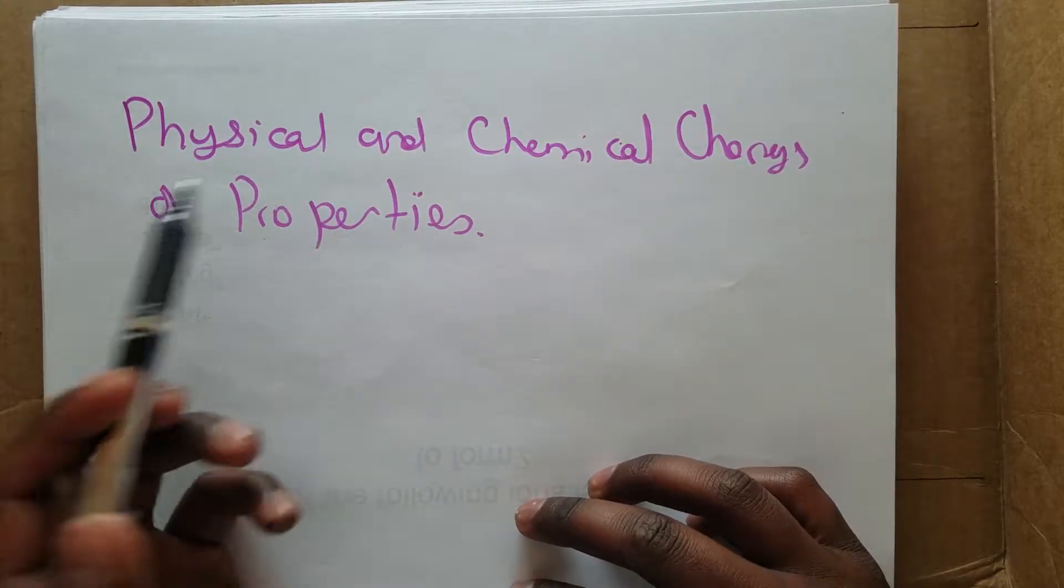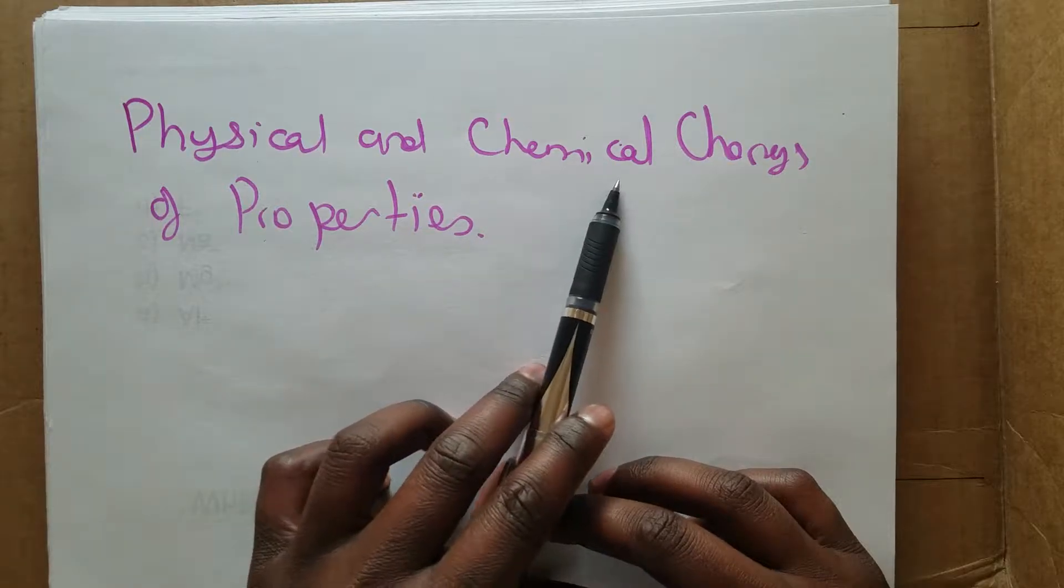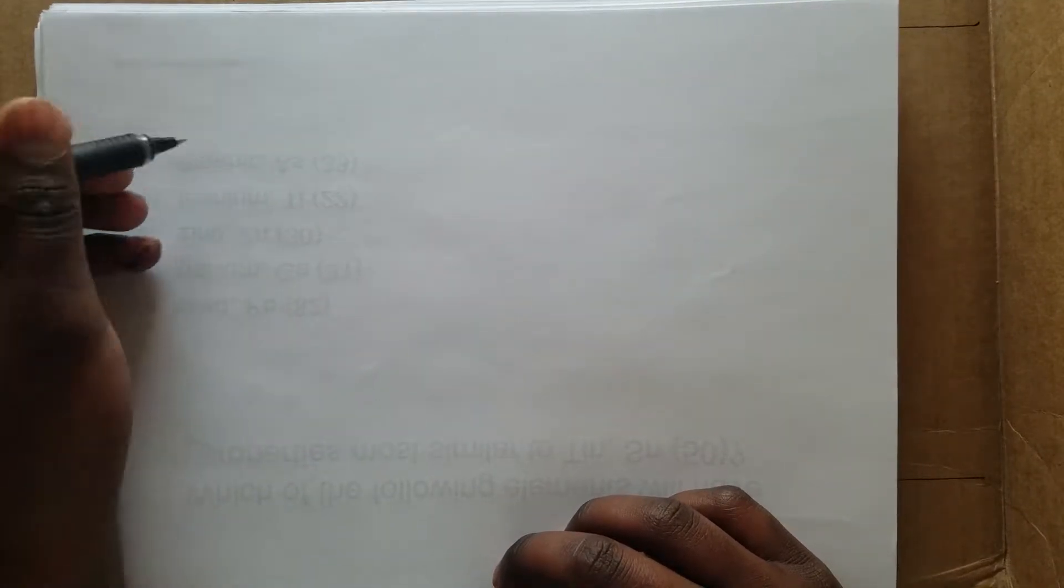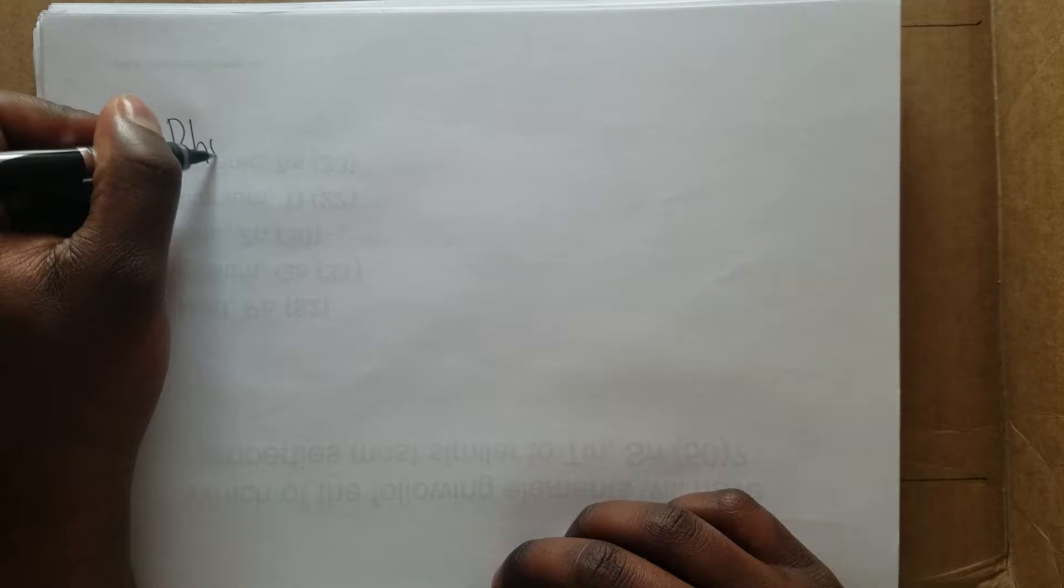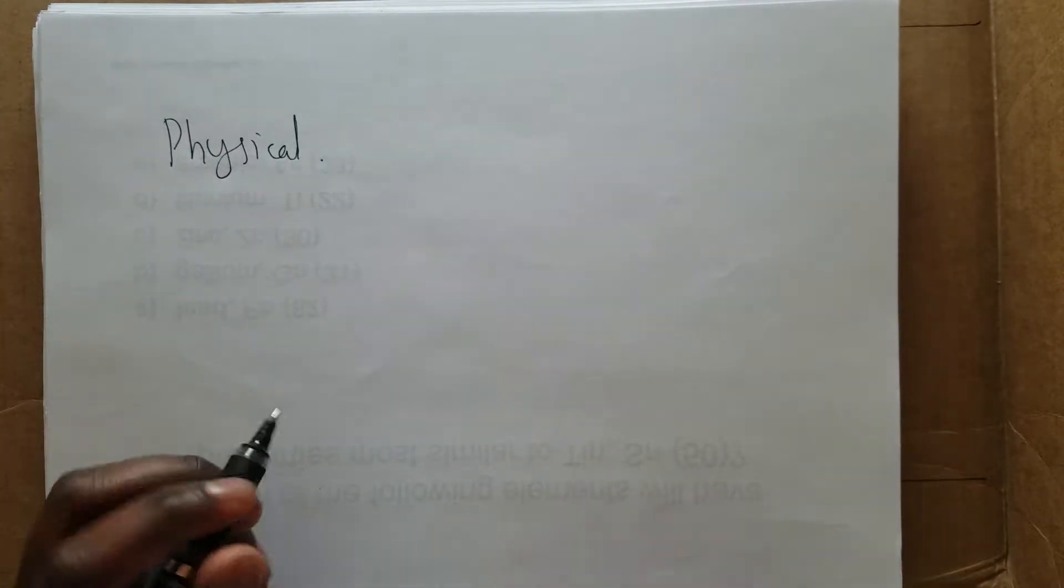When does a substance undergo physical or chemical changes? Let's look at what is a physical change. A physical change is when a substance changes state but doesn't change composition. It doesn't change the product. The product of whatever the substance is remains the same.